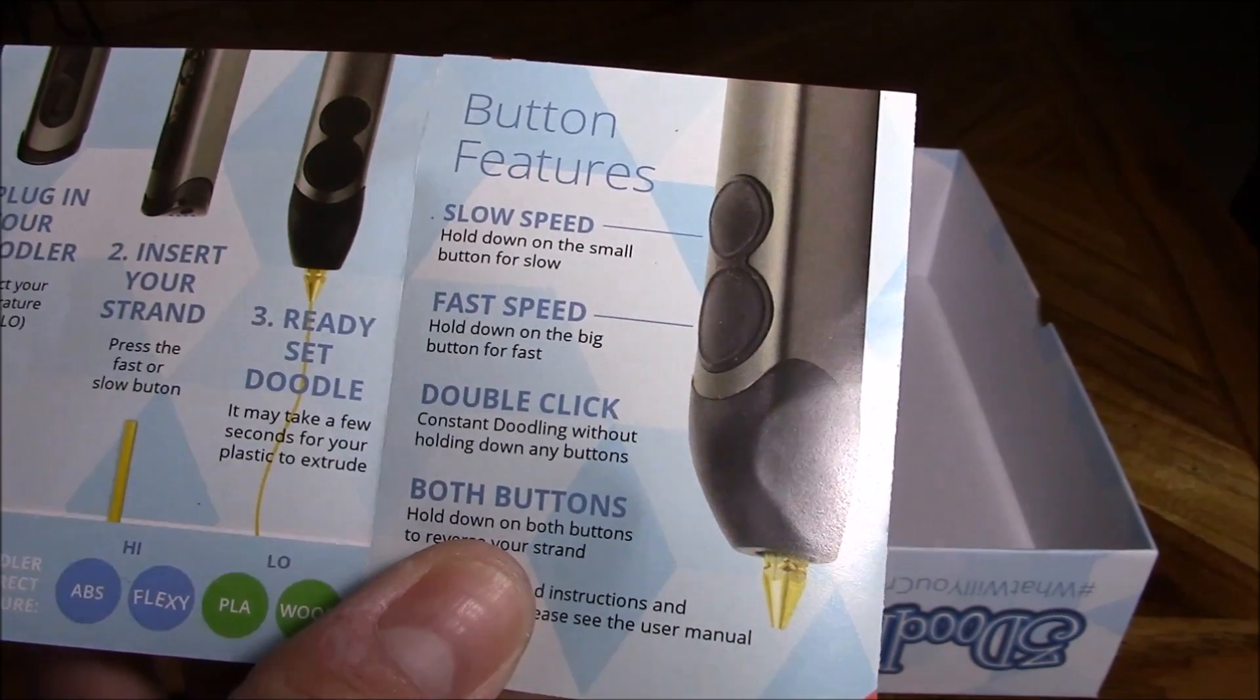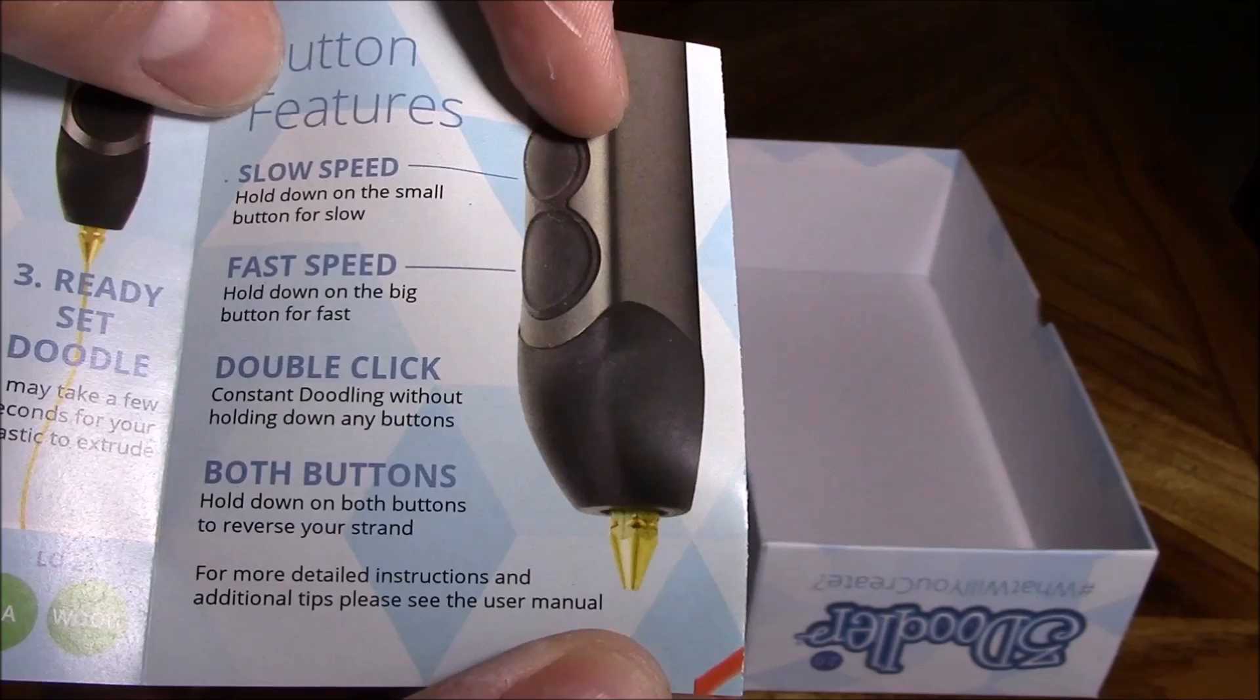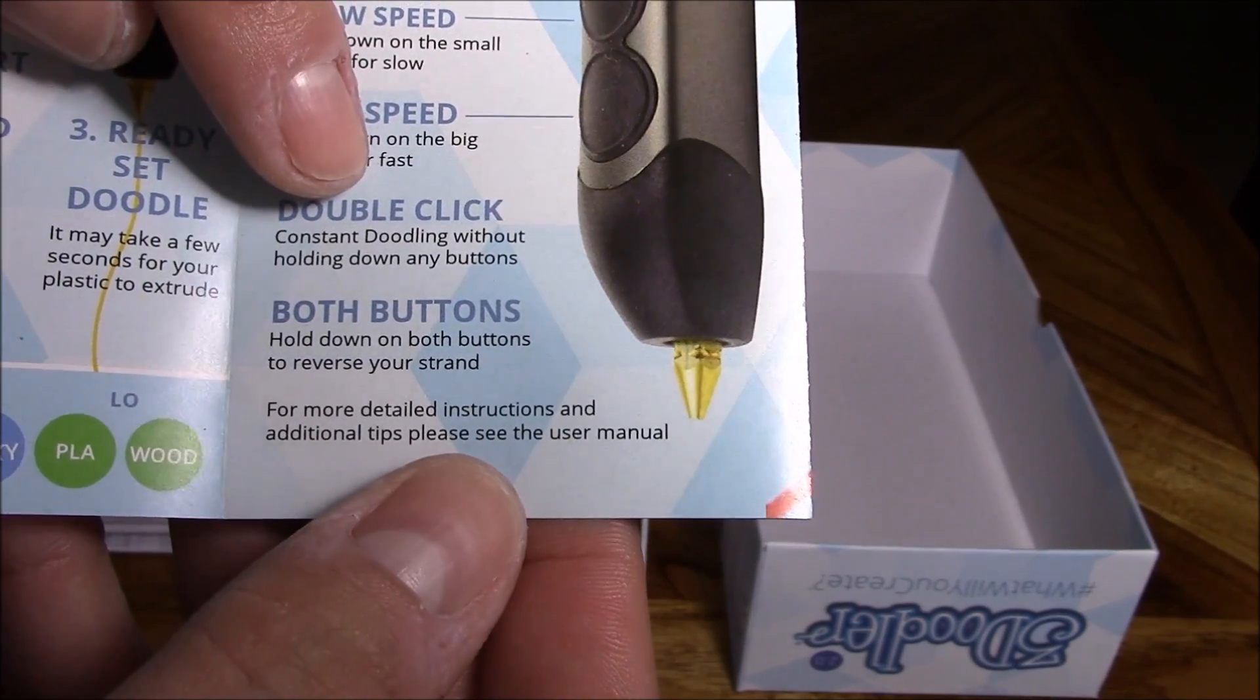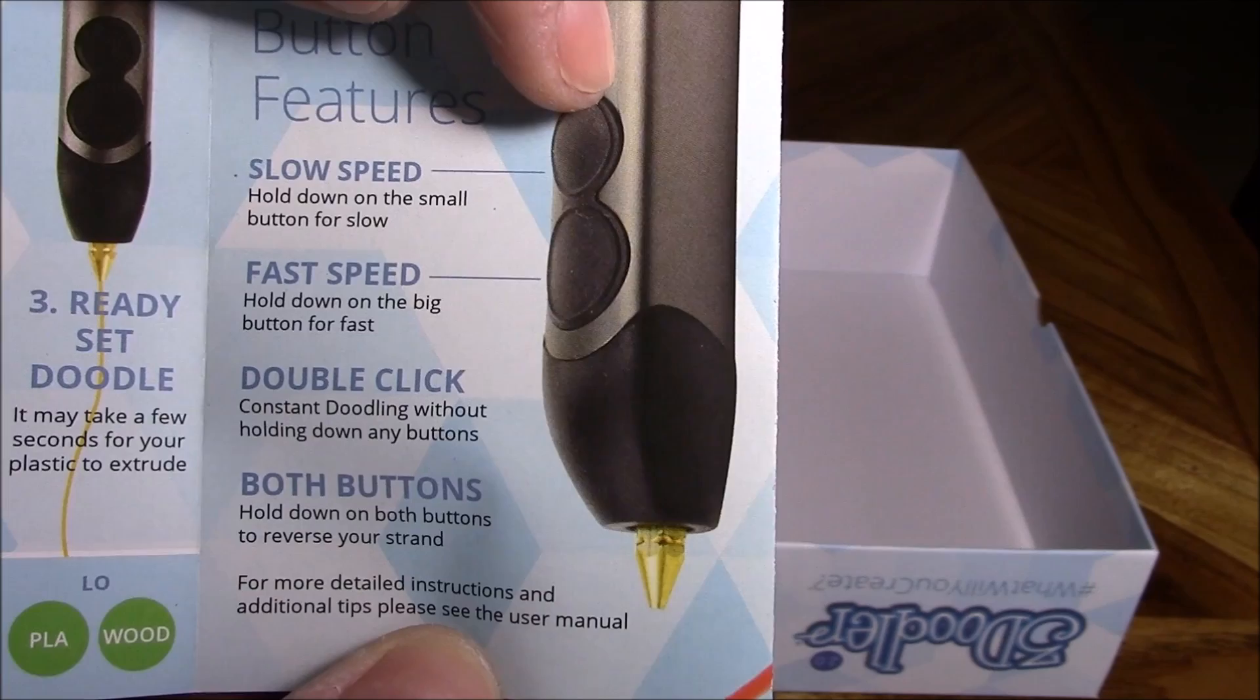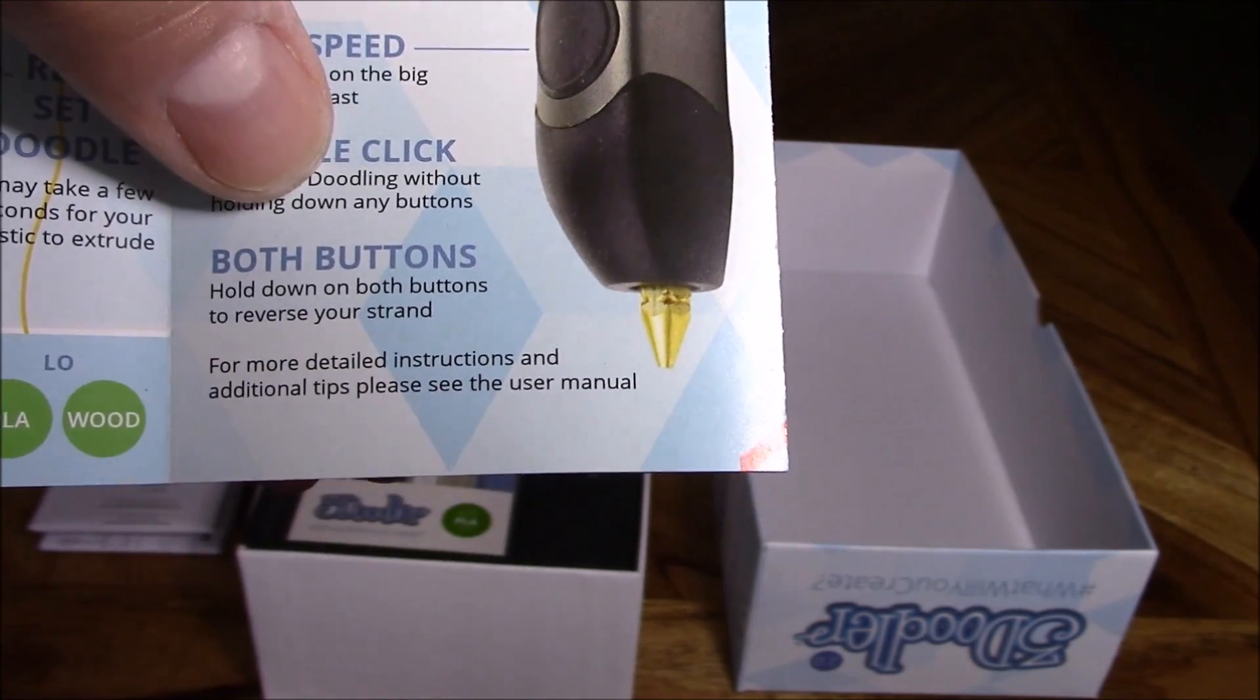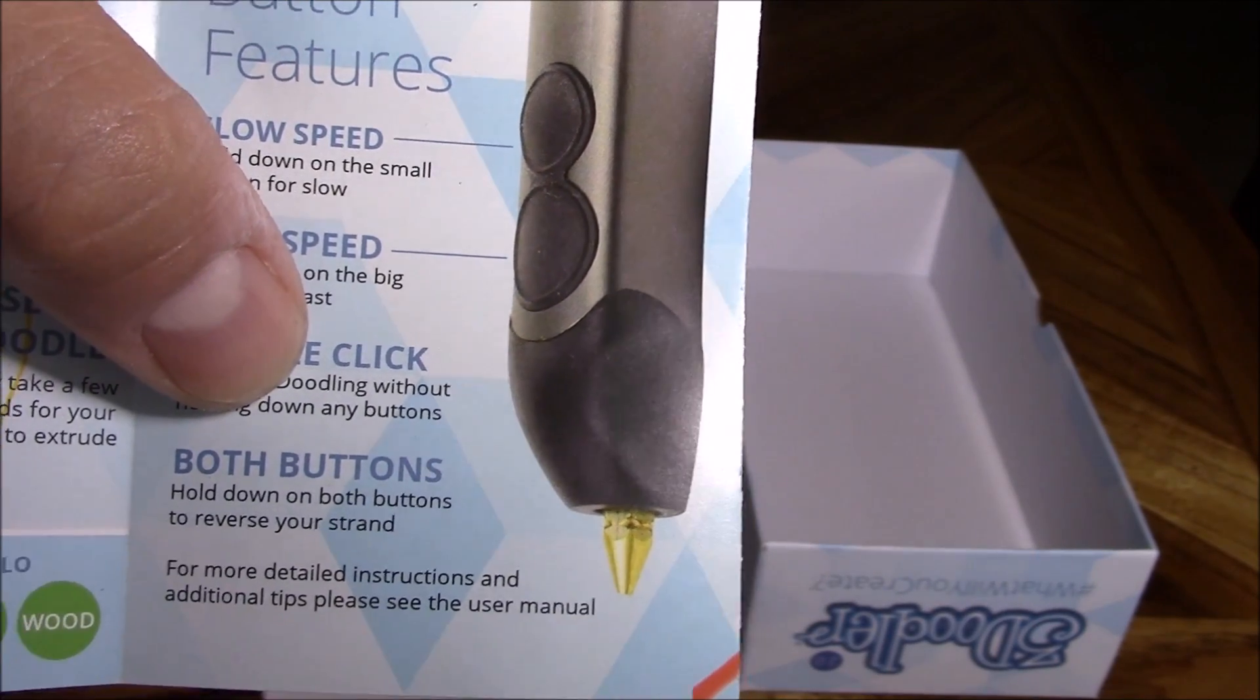It kind of works like a hot glue gun in a sense. So here's the button features. This top button is for slow speed. You hold it down and it'll feed the plastic strand through the tip slowly. Now if you double click the button, there's also another feature. When you double click the top button, it'll auto feed without holding down the button slowly. Now if you're switching out plastic strands for a different color, then you hold down both buttons and it'll actually reverse the plastic strand out of the unit.